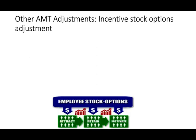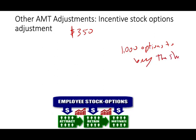So let's take a look at the first one: incentive stock options. First of all, what are stock options? Stock options are when the company wants to motivate employees, compensate them, retain them. So let's assume you work for Apple and Apple is trading at $350 per share. They will give you 1,000 options to buy the shares at $400. Well, those 1,000 options are worthless to you right now because you can buy the share today for $350.